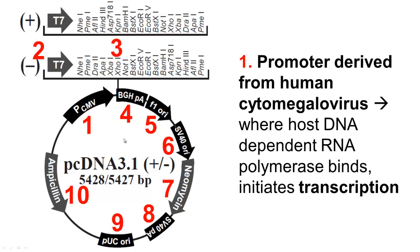So let's start with number one, which is called pCMV. This stands for the promoter derived from human cytomegalovirus. This sequence is responsible for initiating transcription — basically starting to generate your messenger RNA. This is where the host DNA-dependent RNA polymerase and other transcription factors bind. This region is responsible for initiating transcription.